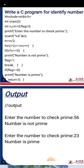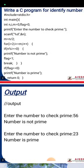The output: Enter the number to check prime - 56. Number is not prime. Enter the number to check prime - 23. Yes, number 23 is prime.